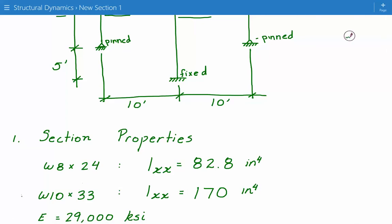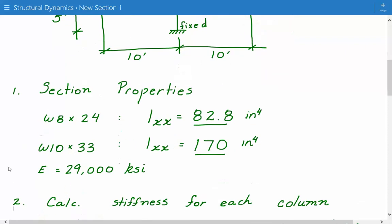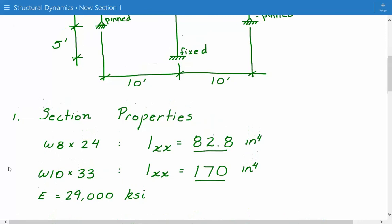So the second moment of inertia of W8 by 24 is equal to 82.8 inches to the fourth power. And for W10 by 33, it's equal to 170 inches to the fourth power. And the Young's modulus of steel is equal to 29,000 KSI.